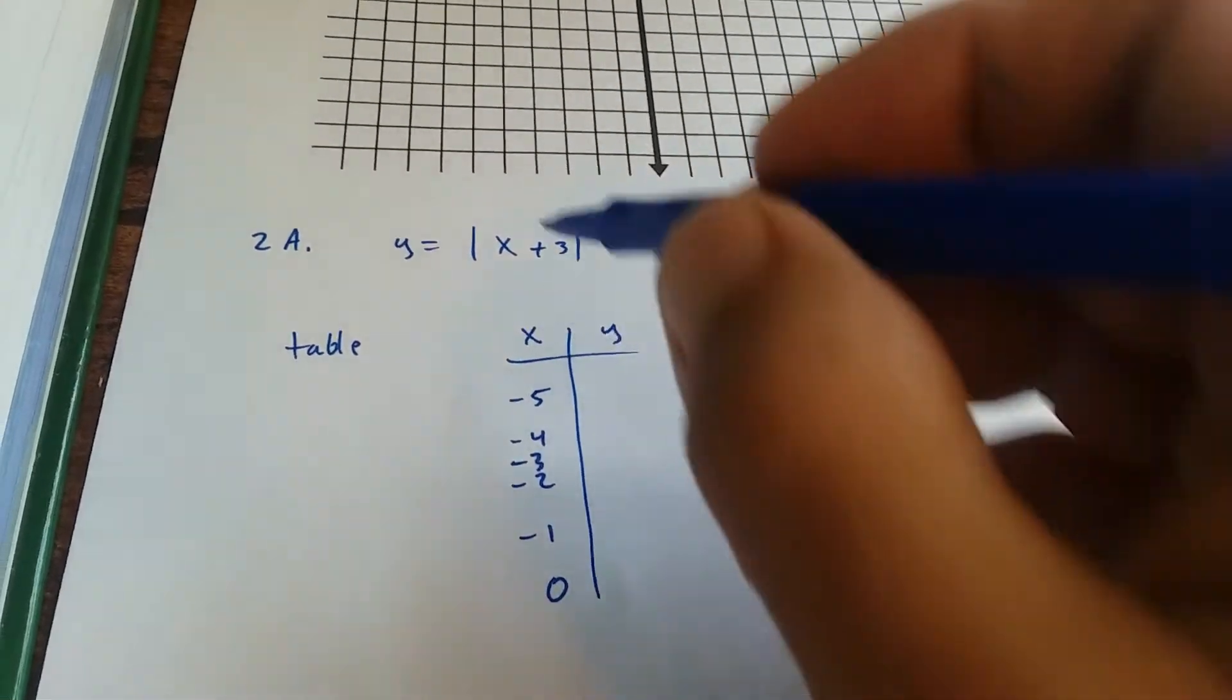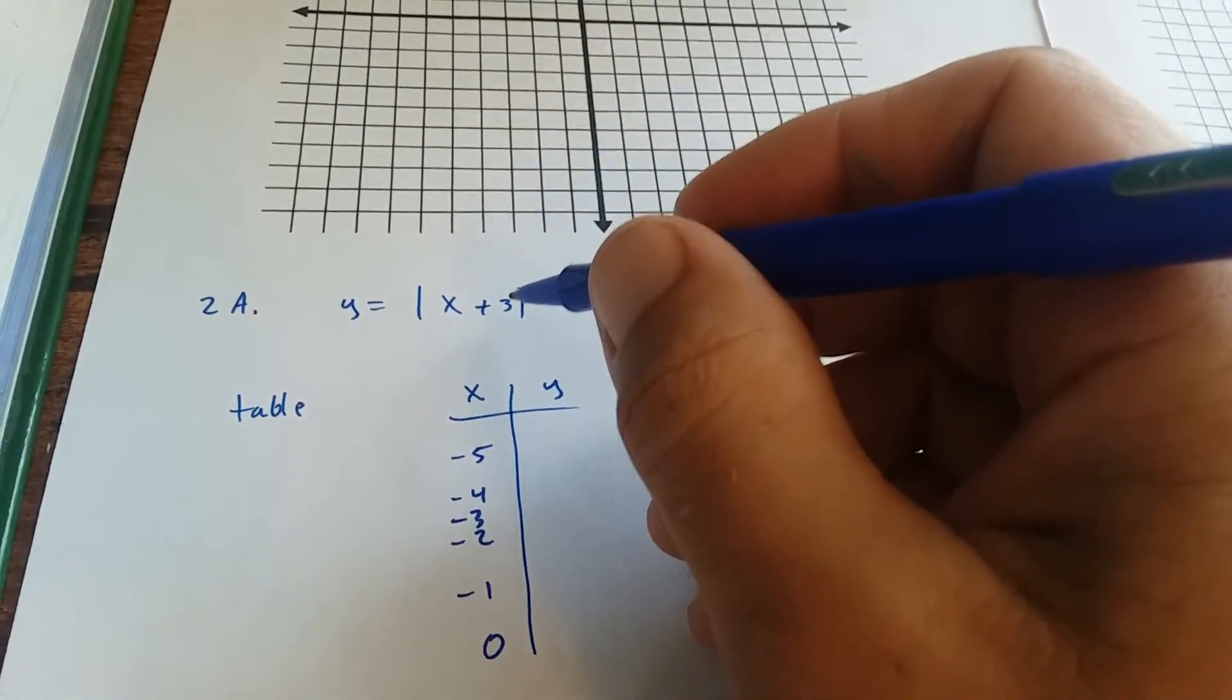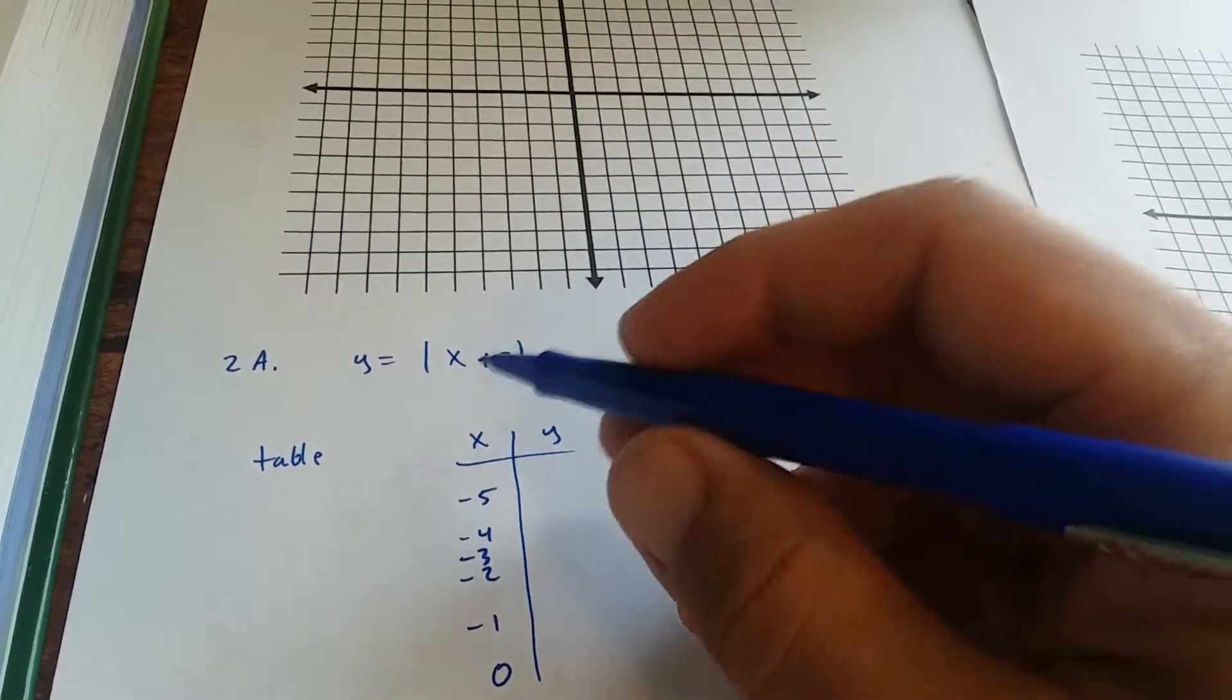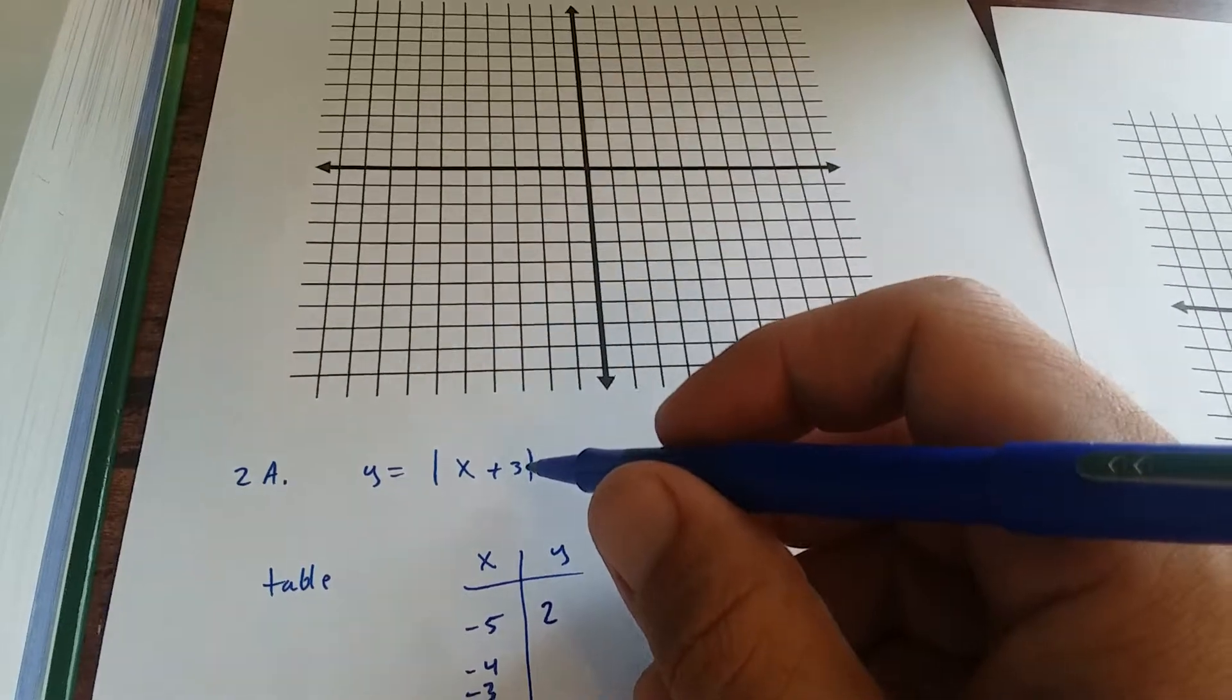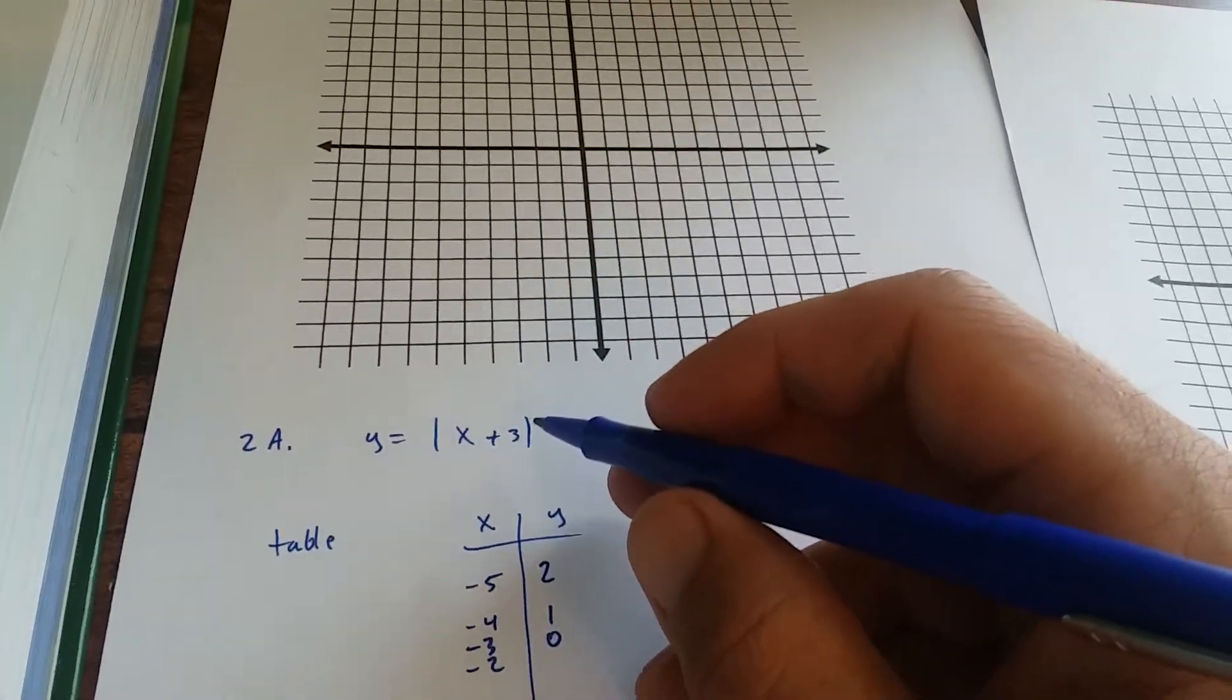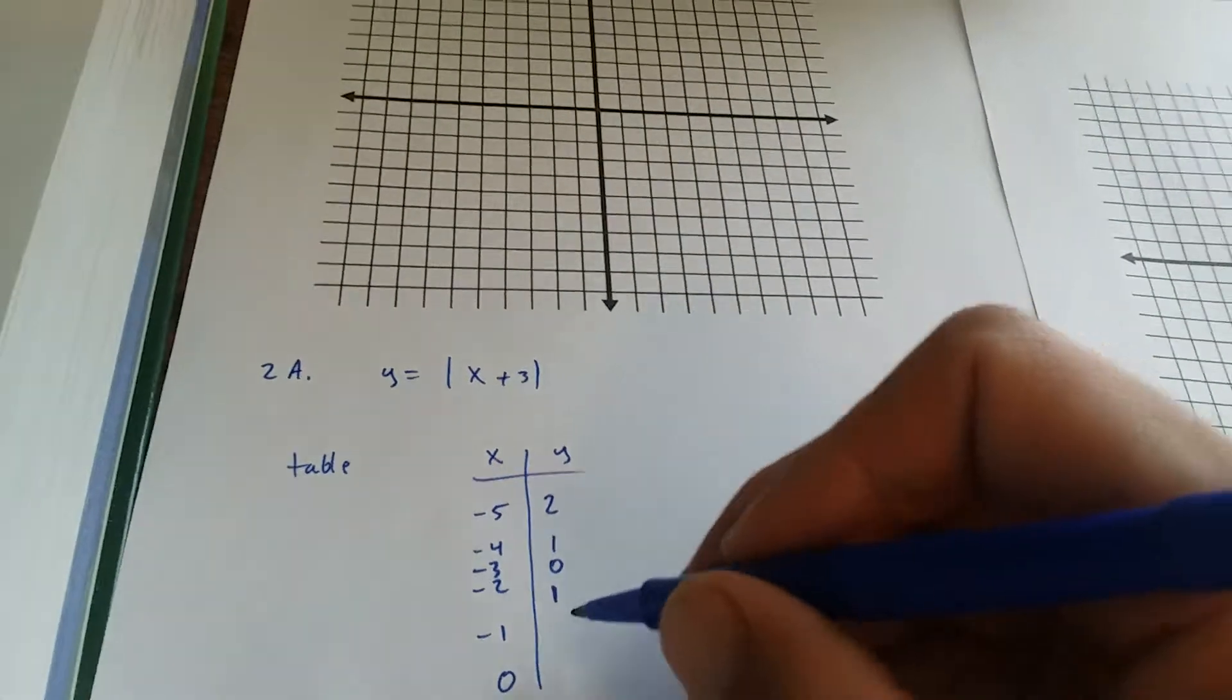Negative 5 for x, negative 5 plus 3. So I chose these specifically because I knew our corner was going to be shifted to the left 3. So you have to know this is a shift to the left. So I chose these points. Negative 5 plus 3 is negative 2. The absolute value of negative 2 is 2. Negative 4 plus 3 is negative 1. The absolute value of that is 1. Negative 3 plus 3 is 0. The absolute value of 0 is 0. Negative 2 plus 3 is 1. The absolute value of 1 is 1. And negative 1 plus 3 is 2. The absolute value of 2 is 2.